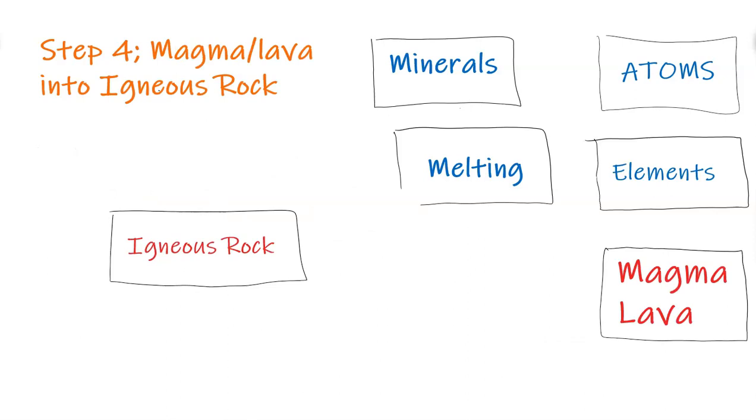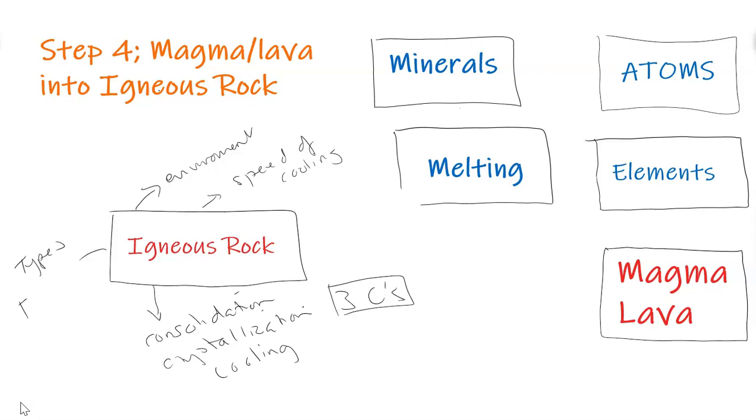Now we have our step four: magma and lava, and we're going to consolidate. The igneous rock has gone through different processes of consolidation, crystallization, and cooling - the three Cs. It's gone from that liquid form of magma and lava based on the environment. We can also do speed of cooling, which would affect the size and organization of the minerals as they crystallize. You're going to form the different types of igneous rock, extrusive versus intrusive, based on texture and grain size and crystal size. But we've gone from atoms all the way through to igneous rock.